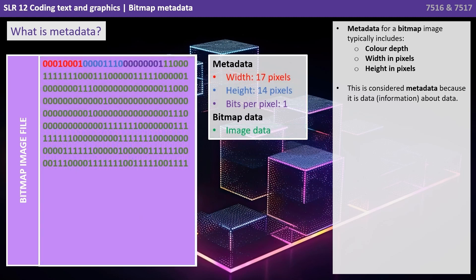Indeed it will contain many other things — it could be, for example, the person who saved the file, or the name of the file. All of this extra data is considered metadata because it's data or information about the data. This metadata is stored along with the actual ones and zeros that make up the data for the bitmap image.